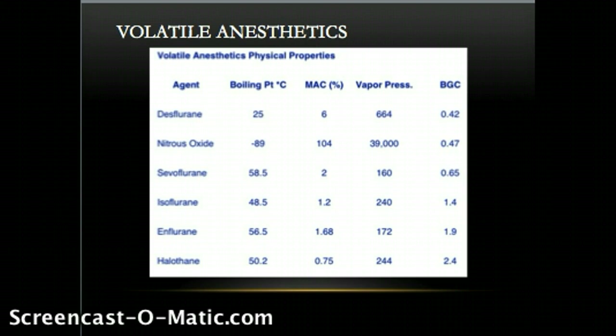Blood-gas partition coefficient, simply put, is the ratio of anesthetic divided between blood and gas of equal volumes. Blood-gas coefficient, or BGC, indicates solubility, and as we know from Meyer-Overton, higher solubility correlates with higher potency. Note that halothane's BGC is 2.4. Converted to percentage, the volume of gas that dissolves in blood as compared with the gaseous state will be 240% higher. So, if 1 mL of halothane is in gaseous state, one would expect 2.4 mL of halothane to be dissolved in the blood. This concept may require a visual provided by Stolting.